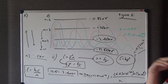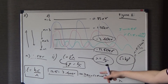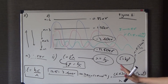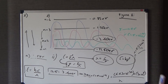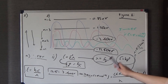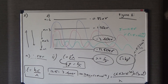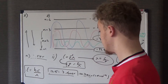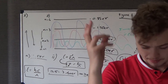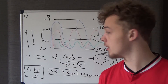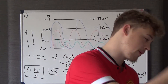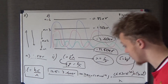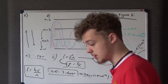Hopefully that makes sense. The mark scheme confirms that approach. You could also work through it the longer way using E=hf, find the frequency, then convert to wavelength — but combining the equations is quicker and easier. That's pretty much it for question one. Thanks for watching, and we'll see you in the next question.